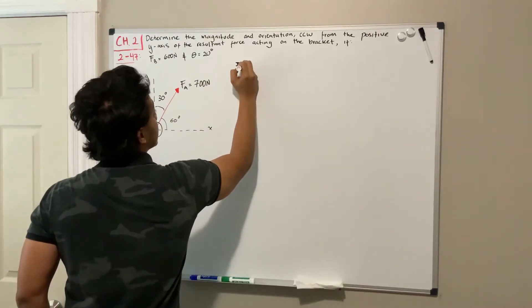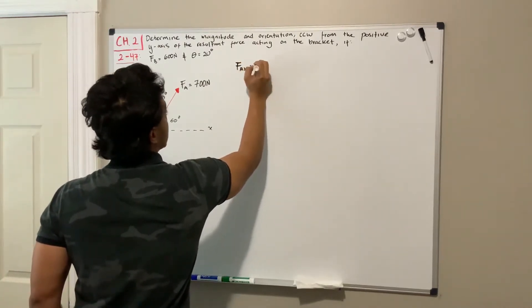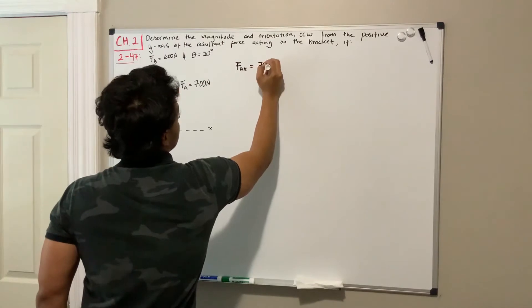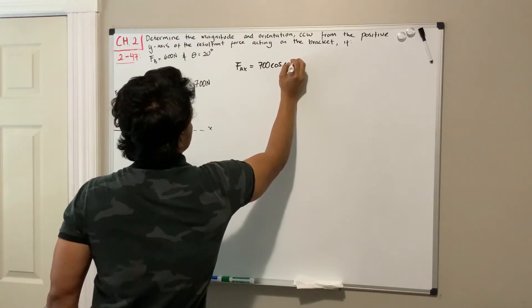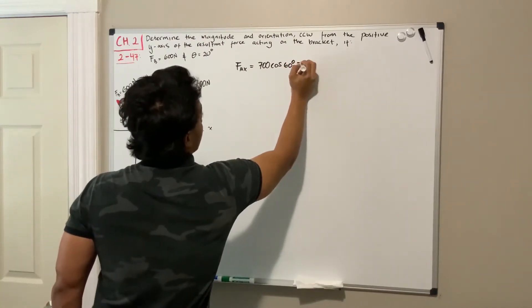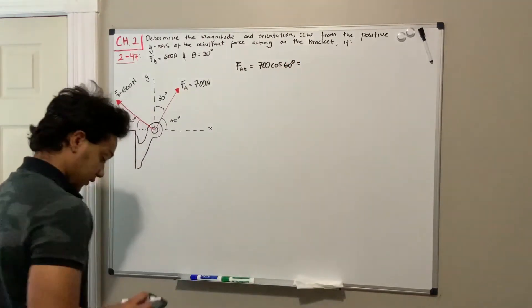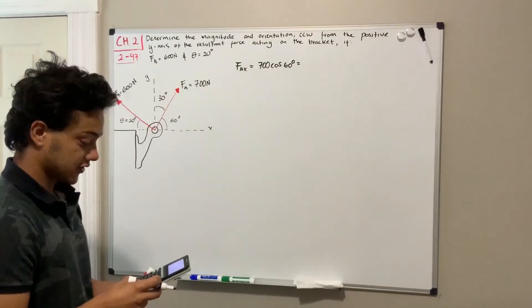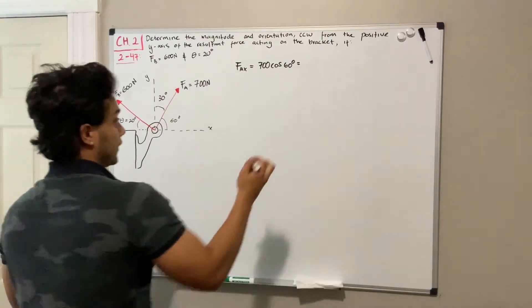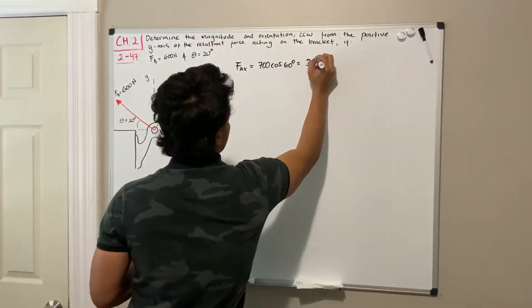For F_a in the x-direction, we're going to have 700 newtons multiplied by the cosine of 60 degrees. So if we use the calculator, we're going to find 700 cosine of 60, and it will give us 350 newtons.